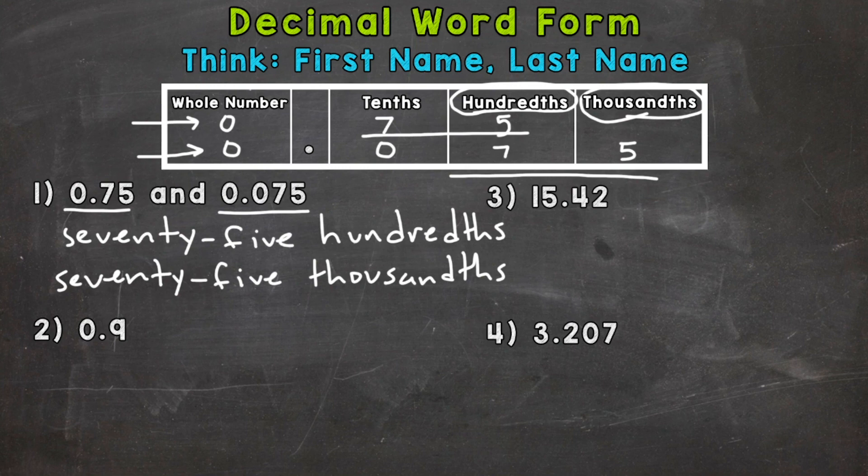Onto number two. So first name, read this number as is. And that's just a nine. Last name, where does that decimal end? It ends in the tenths place. So you would say that nine tenths.